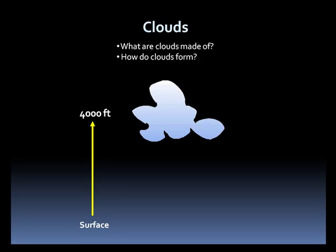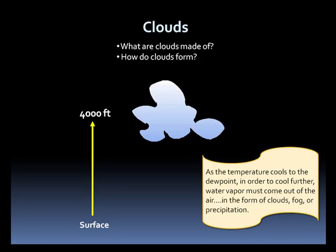In order for the air parcel to cool further, water vapor will have to come out of the air, either in the form of clouds, precipitation, or fog. The air temperature can never be colder than the dew point. Now let's examine how clouds form.